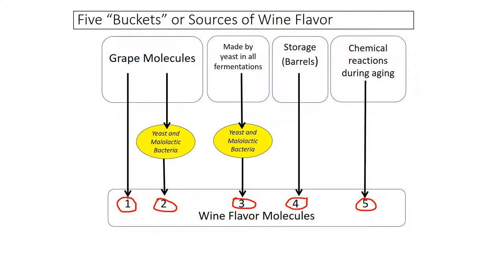The first source of those are molecules that come from the grapes themselves. They are in the grapes and they go straight through to the wine with no change, so there's no processing. These would be molecules in grapes like Viognier, Riesling, and Muscat, where the grapes taste a lot like the finished wine — especially the fruit and floral flavors you'd find in the grapes, and you find them in the finished wine as well.